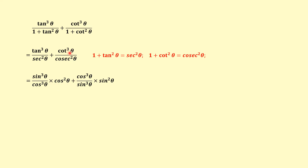Similarly, cot³θ equals cos³θ/sin³θ, and the reciprocal of (1 + cot²θ), which is cosec²θ, gives sin²θ. So we multiply it. The common factor is cos²θ — canceling, the denominator becomes cosθ and sin²θ becomes sinθ. This gives us sin³θ/cosθ plus cos³θ/sinθ.